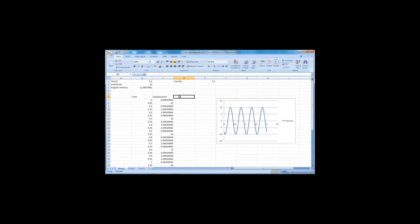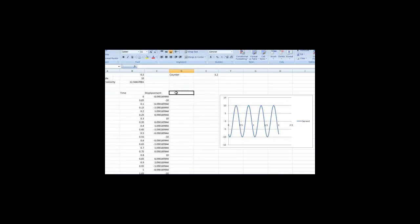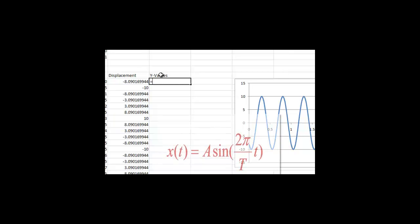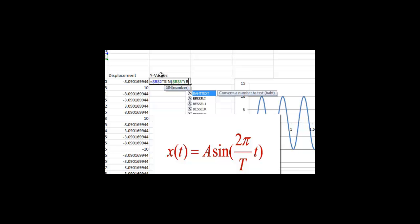Let's do this in our spreadsheet. Add an extra column titled y-values. Similar to the displacement, fill in the first row with equals B2 — the amplitude — times sine of B3, the angular velocity, times B7, the time, plus E1, our counter.